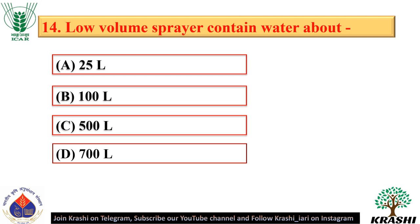Question number 14. Low volume sprayer contains water about 100 litres — option B.